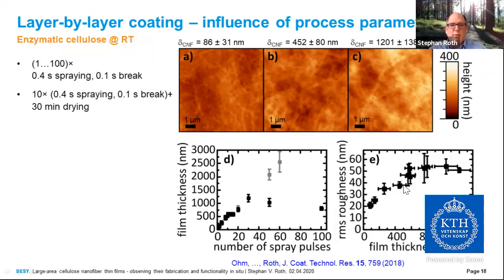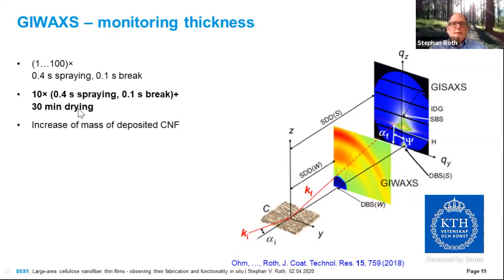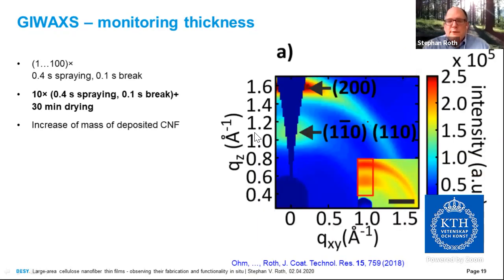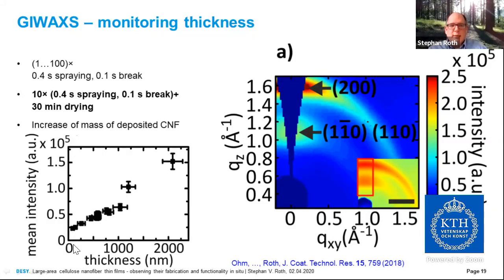We stick to the second spray procedure as it allows us to create thick films. Using GIWAXS, we observe the scattering pattern composed of the (1,-1,0), (1,1,0) peak and the (2,0,0) peak of the CNF. CNF is partially crystalline, so we can observe the Bragg scattering of the fibrils deposited on the surface. The mean intensity in the marked region increases more or less linearly with film thickness, because we are depositing more and more CNFs on the surface. This confirms layer-by-layer growth using the spray procedure with drying time in between, and you can continue up to the point where you have no solution left.